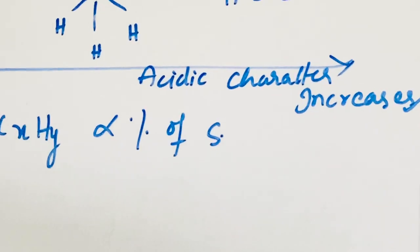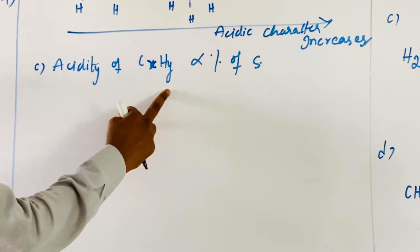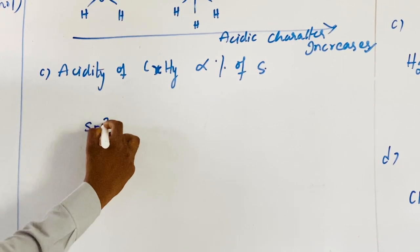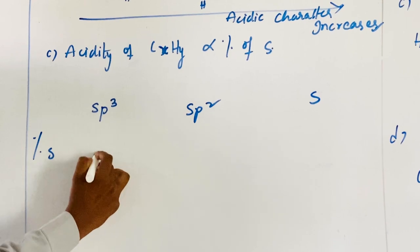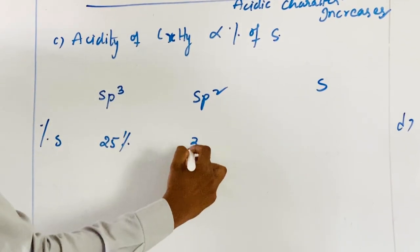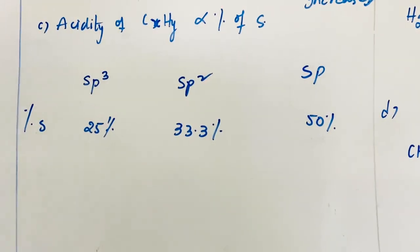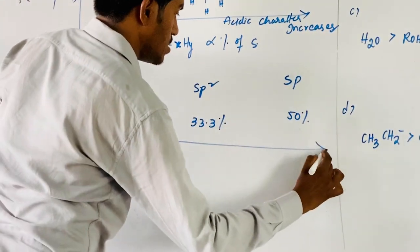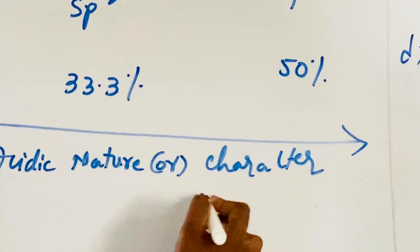Now coming to the acidity of hydrocarbons in terms of percentage of S character. For sp3 hybridization the percentage of S character is 25%, for sp2 hybridization it is 33%, and for sp hybridization it is 50%. As the S character goes on increasing, the acidity nature also increases. Therefore, acidic character increases from left to right — sp3 to sp2 to sp.